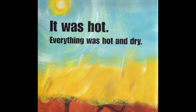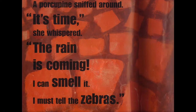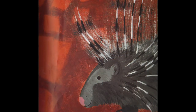It was hot. Everything was hot and dry. The red soil was hot and dry and cracked. What do you notice about the yellow grass? Why do you think it's yellow? And look at the soil — what color is it? And why is it cracked? A porcupine sniffed around. "It's time," she whispered. "The rain is coming. I can smell it. I must tell the zebras." Where do you think porcupine is? Look at the images around the porcupine. And why do you think porcupine is there?